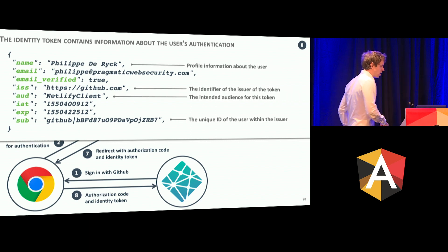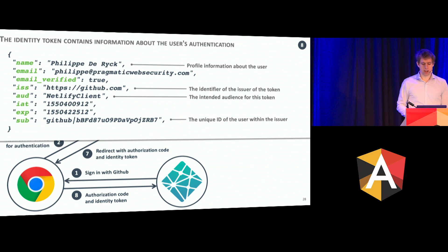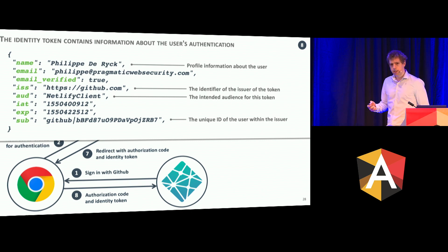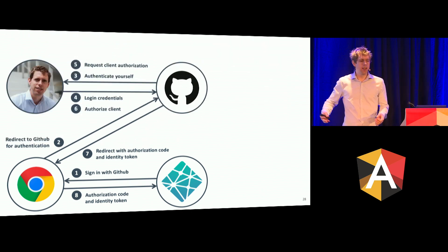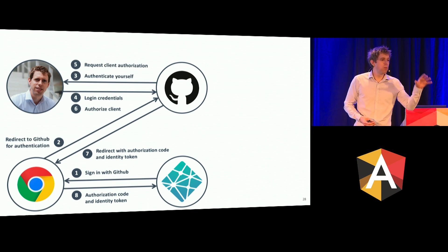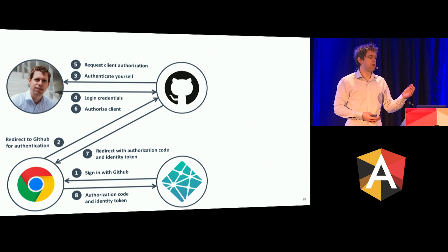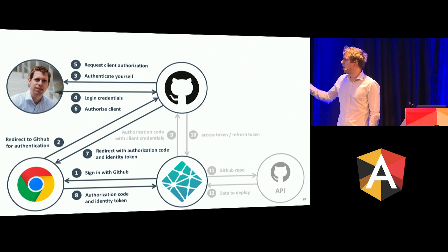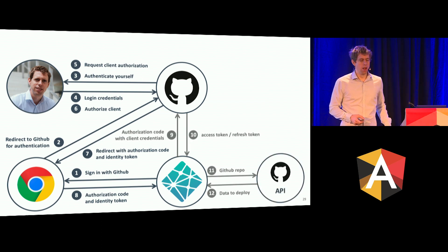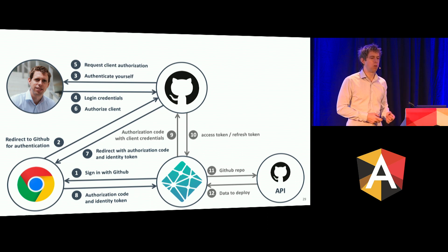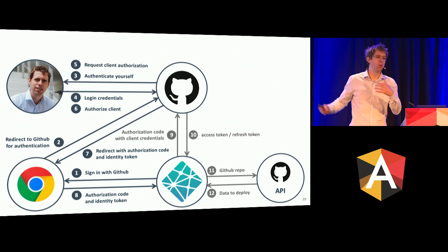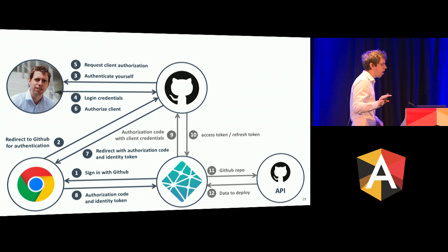This is OIDC — now we're authenticated at Netlify. If Netlify only wants to do authentication, this is where the flow would end. But in reality, they also want access to your GitHub repos. So what they can do is use OAuth to exchange that code for an access token and a refresh token, and use those tokens to access the GitHub APIs. I'm not going to talk about the details of OAuth here — that would take us way too far and you're hungry. I did talk about that yesterday for a full day.